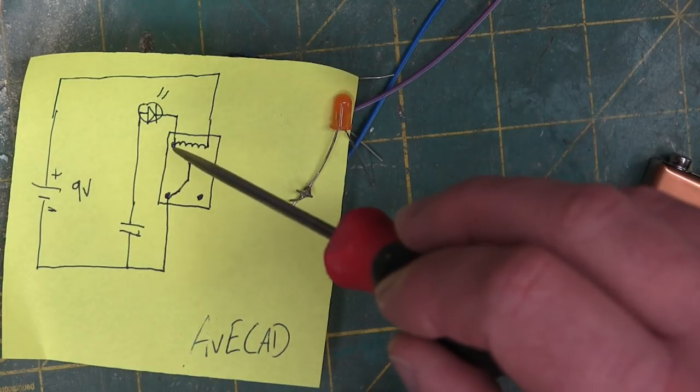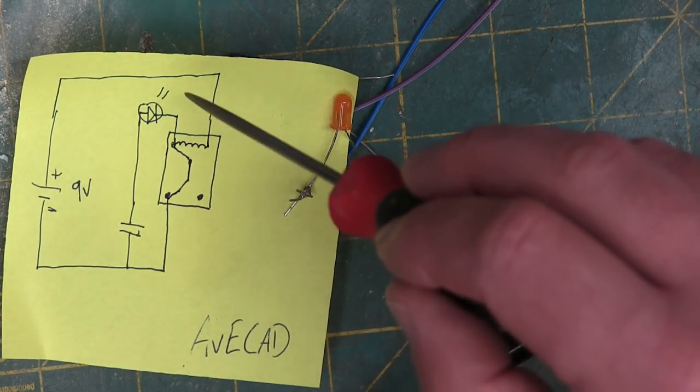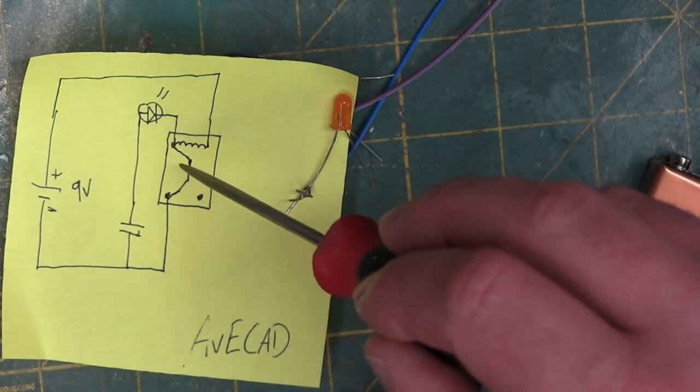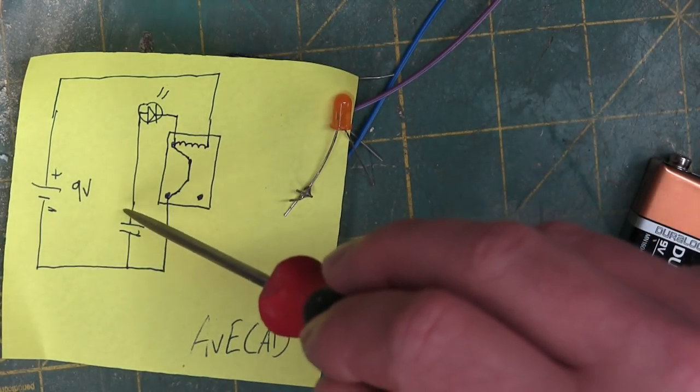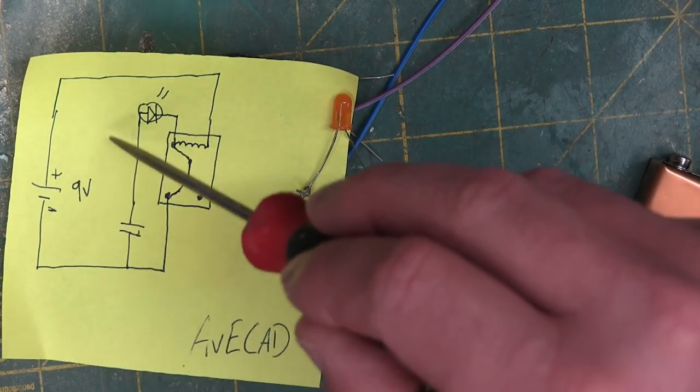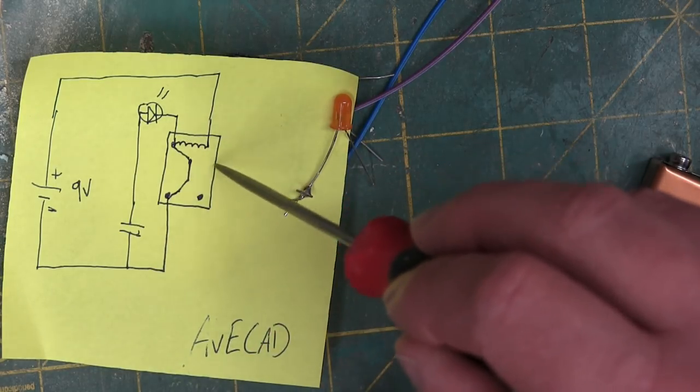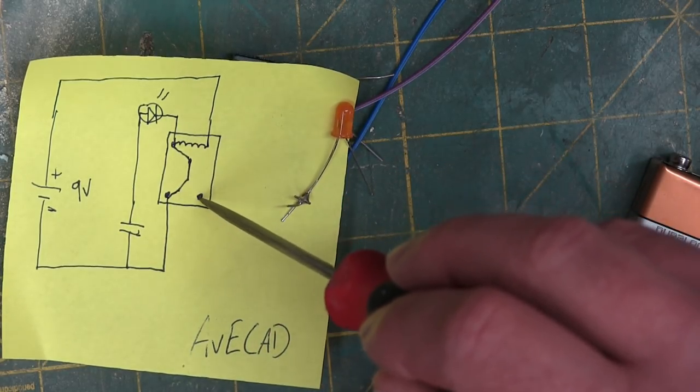Okay, so when the field gets strong enough, this chooch is over to here. Now these pixies ain't got nowhere to go. This field starts to collapse. So we start pulling energy out of here to keep this field strong enough so that the contact stays over.